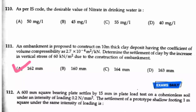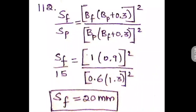Question number 112: A 600 mm square bearing plate settles by 15 mm in a plate load test on cohesionless soil under an intensity of loading of 0.2 N/mm². The settlement of a prototype shallow footing 1 meter square under the same intensity of loading is to be found. We know the relation between plate and foundation settlement.